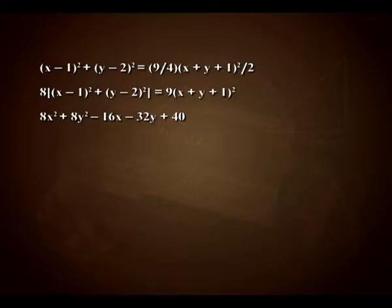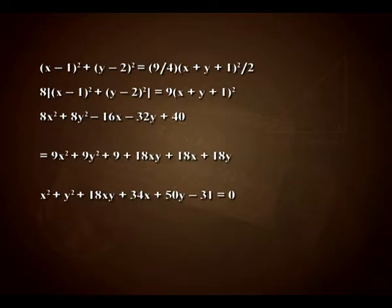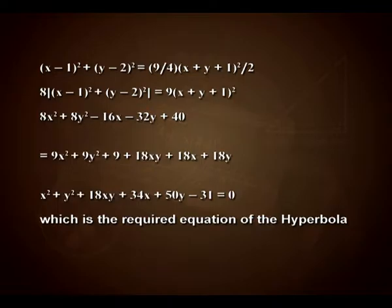Now, we have 8[(x−1)² + (y−2)²] = 9(x + y + 1)², which gives us 8x² + 8y² − 16x − 32y + 40 = 9x² + 9y² + 18xy + 18x + 18y + 9, which on solving reduces to x² + y² + 18xy + 34x + 50y − 31 = 0, which is the required equation of the hyperbola.